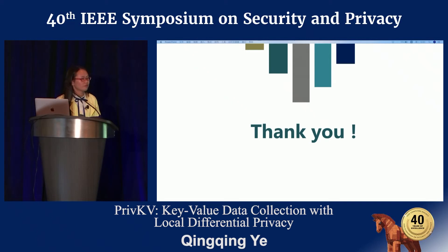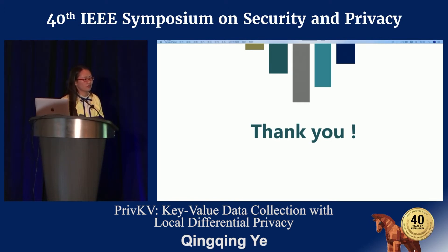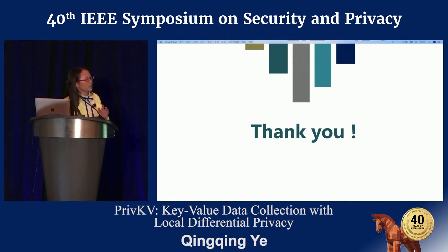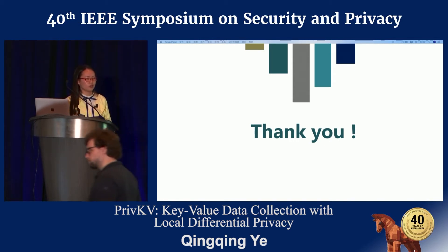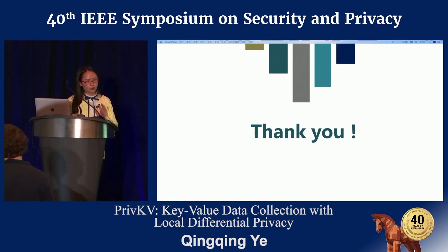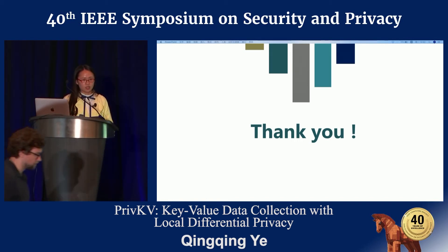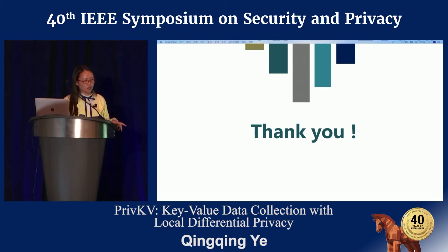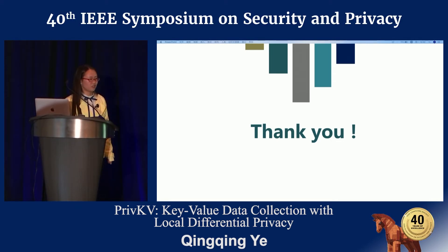Do you assume each user has multiple key-value pairs or just one? A set of key-value pairs. So in this case, is the privacy guarantee per pair or per user privacy? For user privacy, we use sampling for a set of key-value pairs and don't allocate the privacy budget for each key-value pair evenly — we just use the sampling technique.